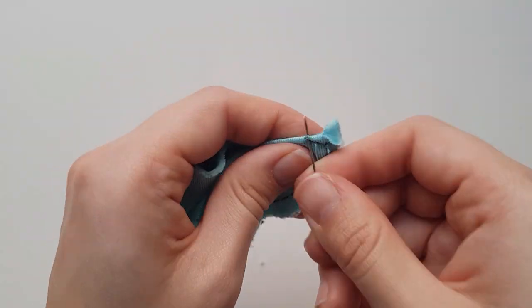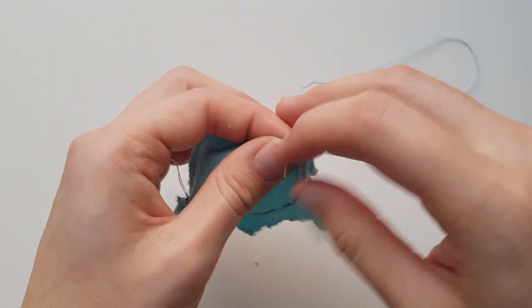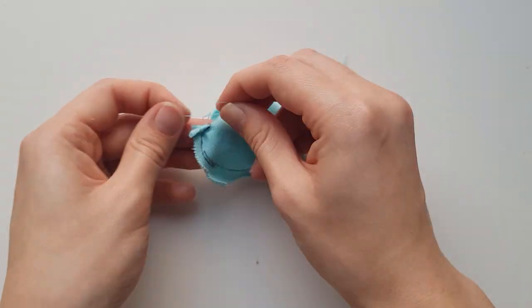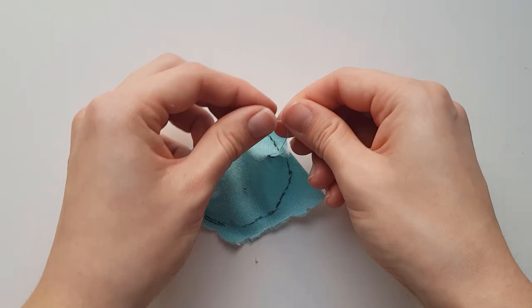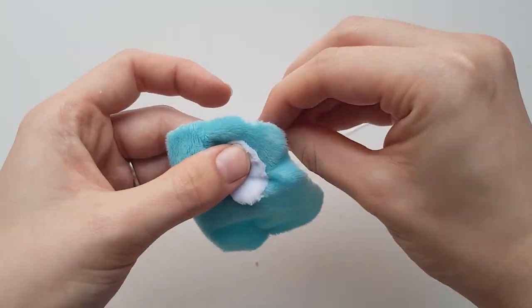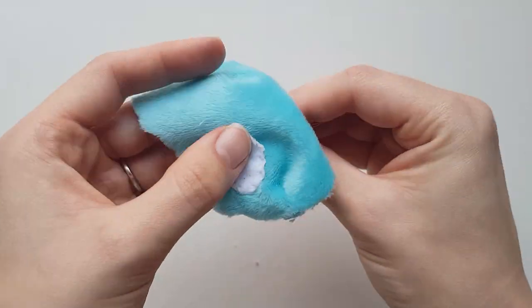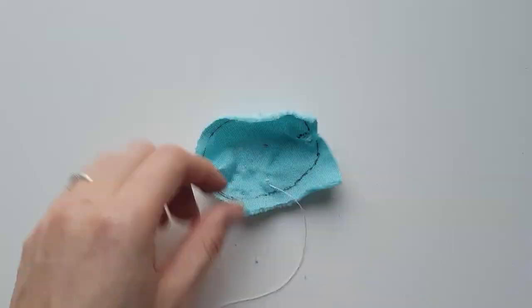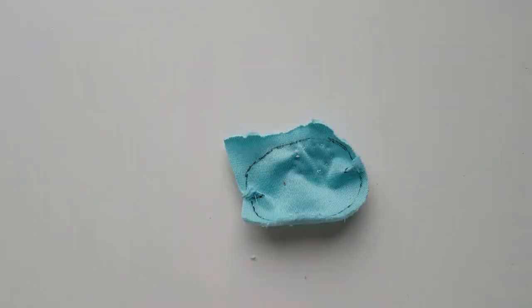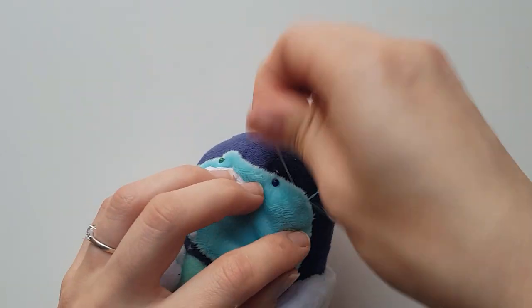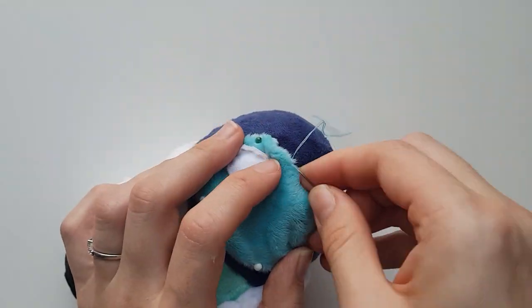For the visor, sew up both darts on each side. Place the glint on the finished left-hand side and use a running or a backstitch to sew it on. Pin the visor to the head so all seam allowance is tucked in and use an invisible stitch to join it.